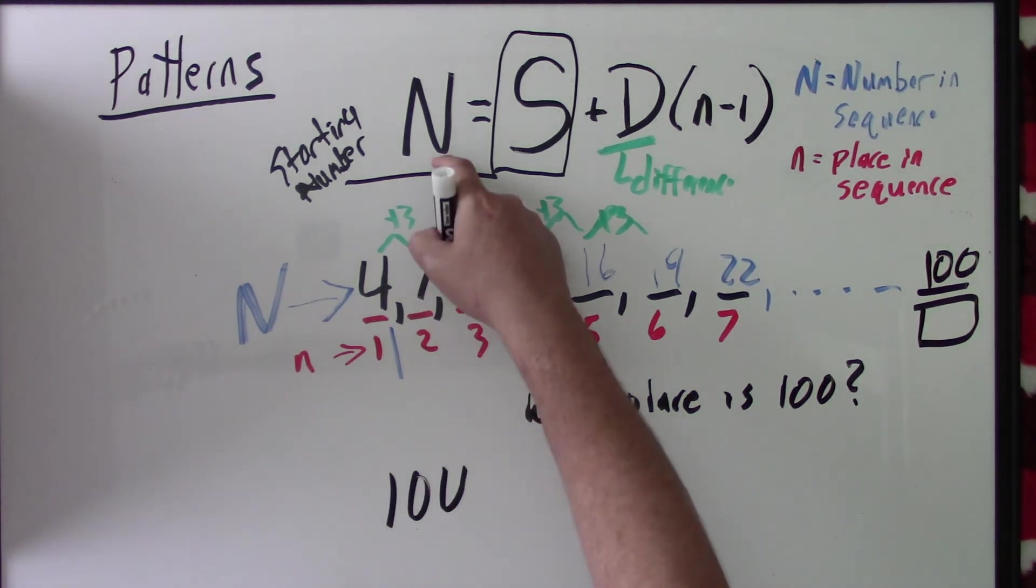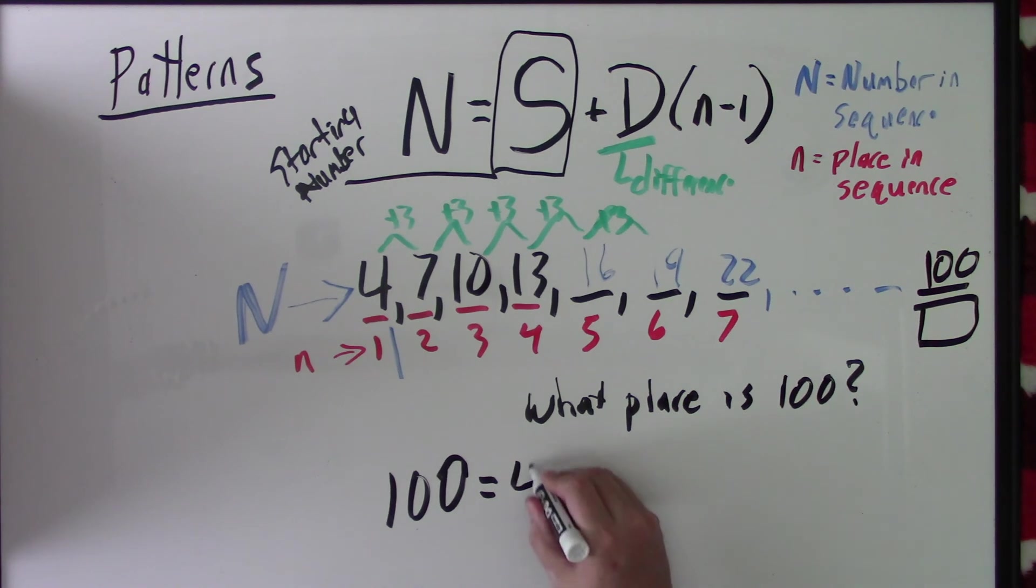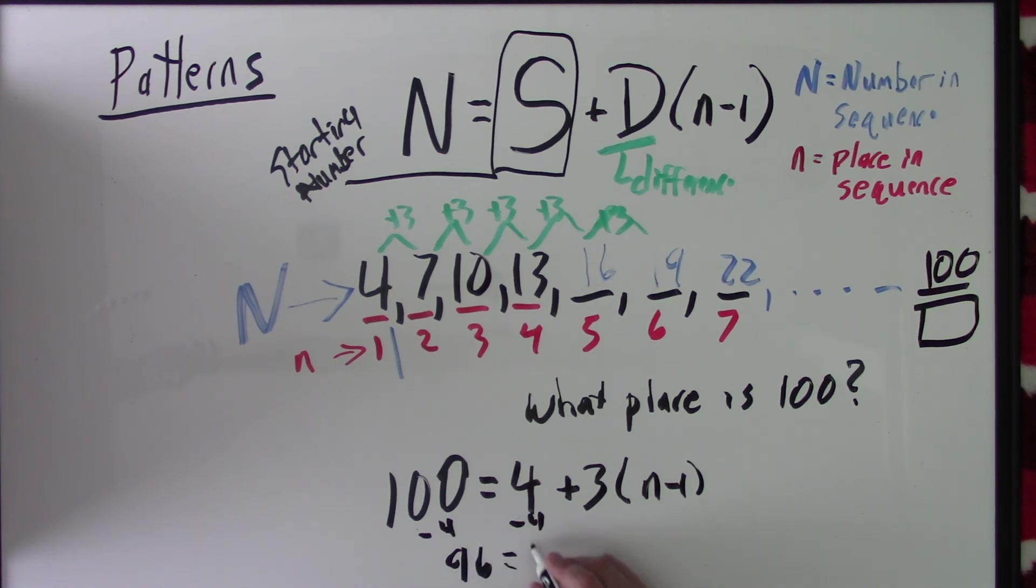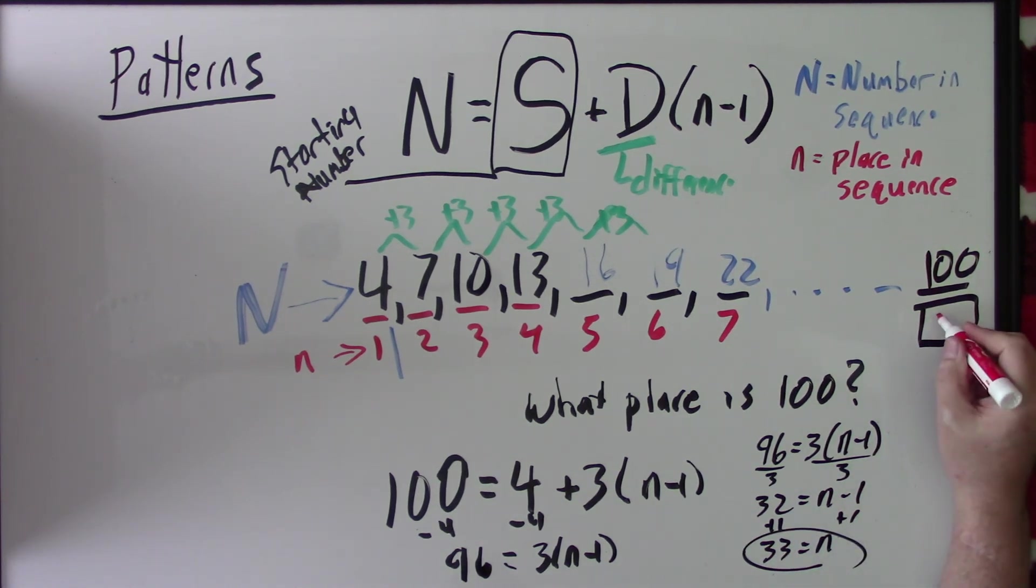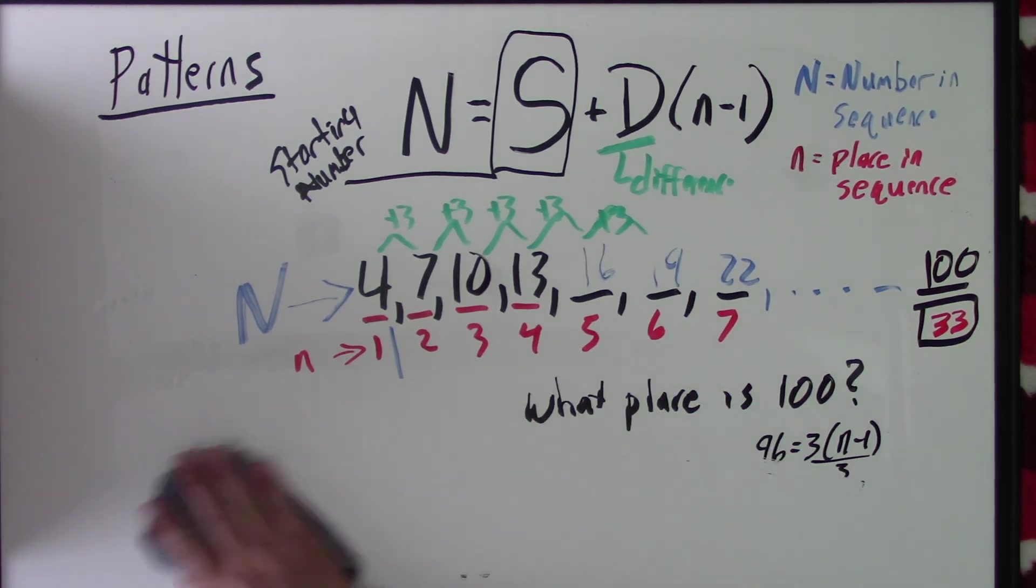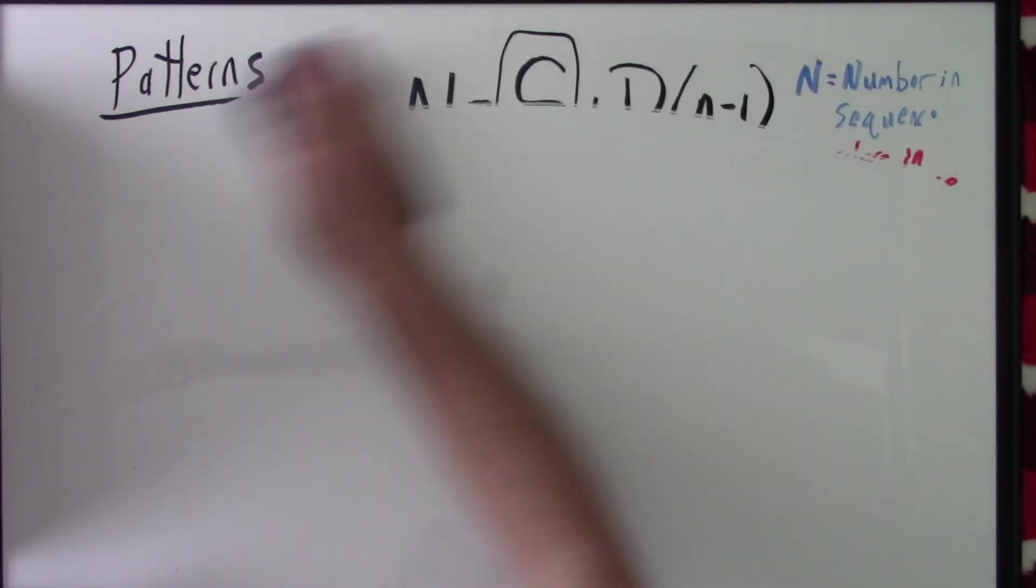Well, 100 is my N. I'm starting at 4. I'm adding 3. And then it's n minus 1. I just have to know how many threes am I adding. So, I subtract 4 from both sides. And I get 96 is equal to 3 times n minus 1. I'm going to write it over here. So, I'm going to divide by 3. So, I get 32 is equal to n minus 1. Add 1. And I get 33 is equal to n. So, the 33rd number is 100.